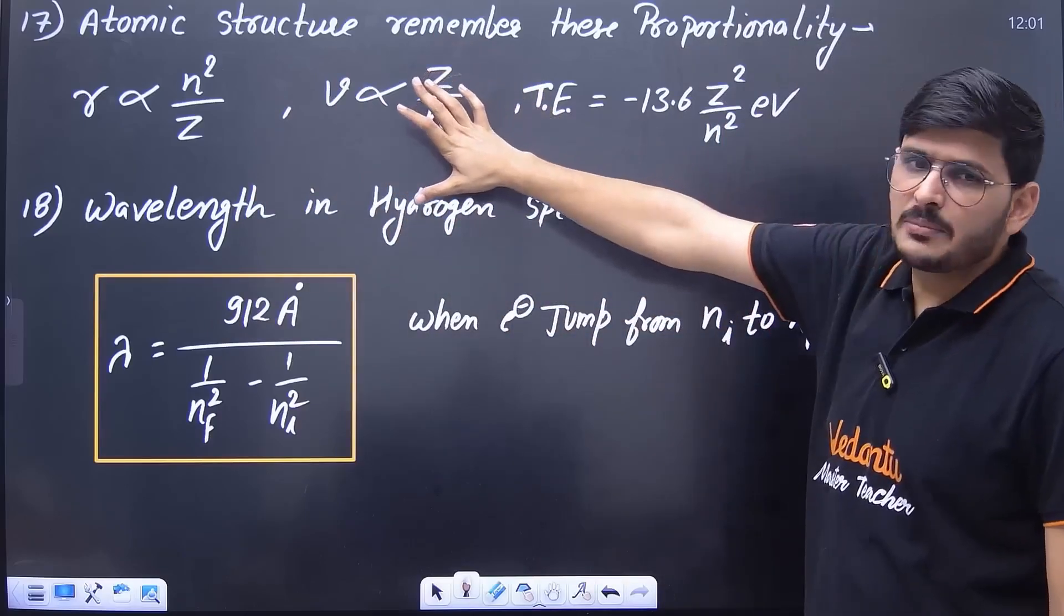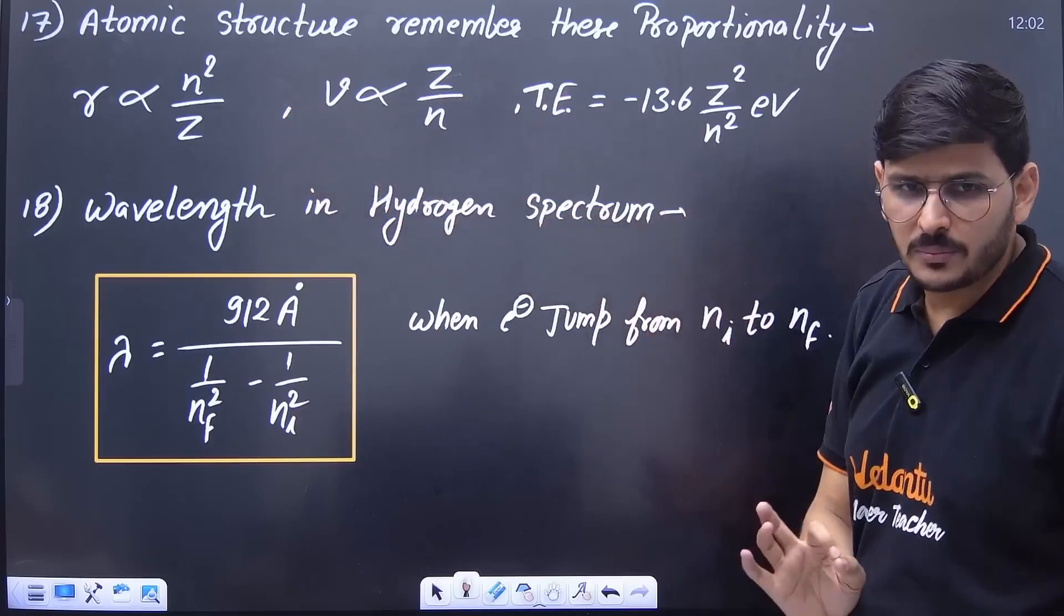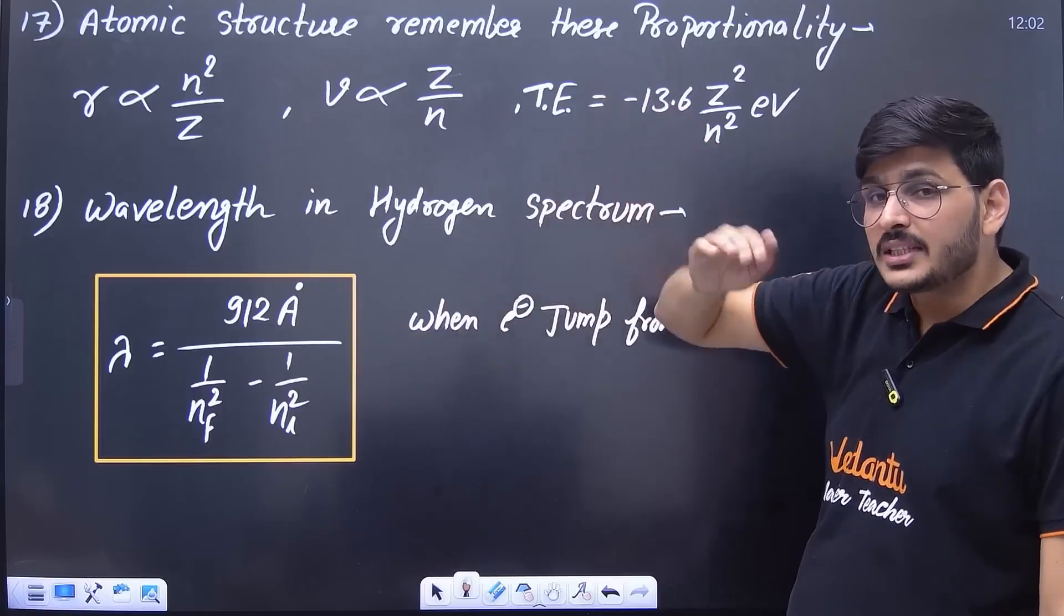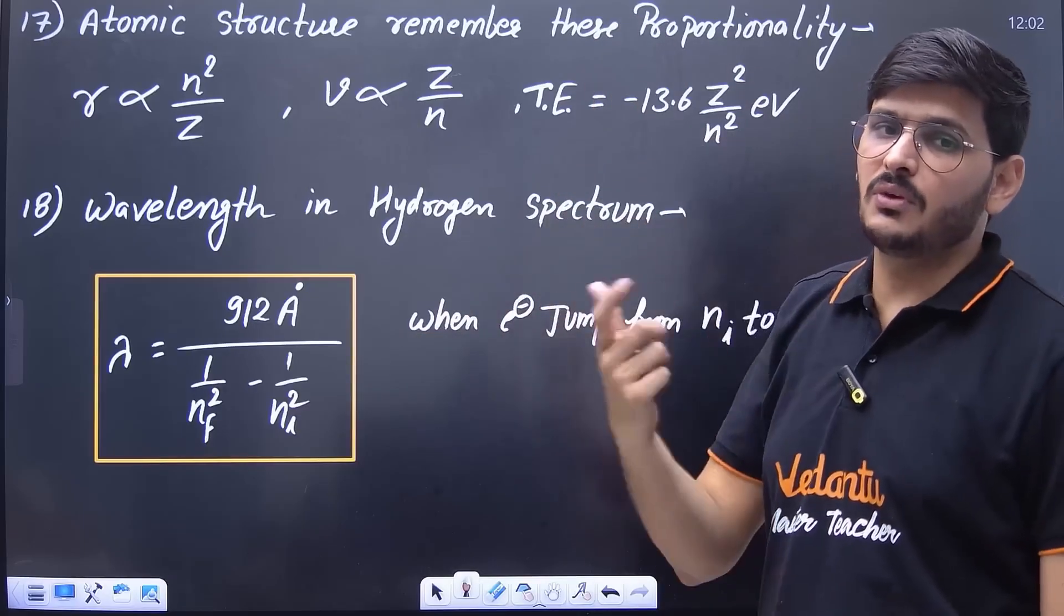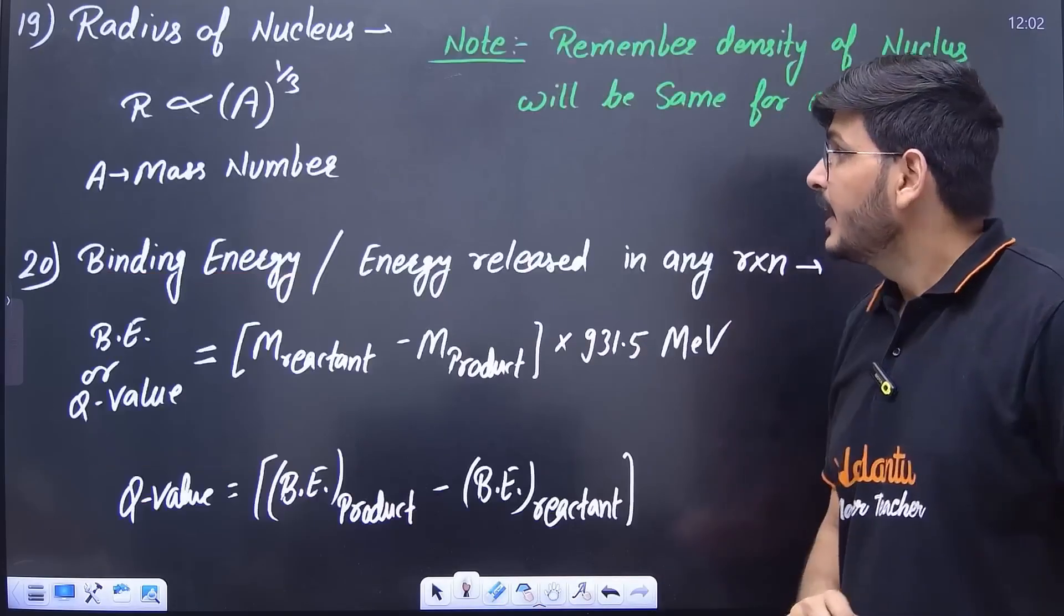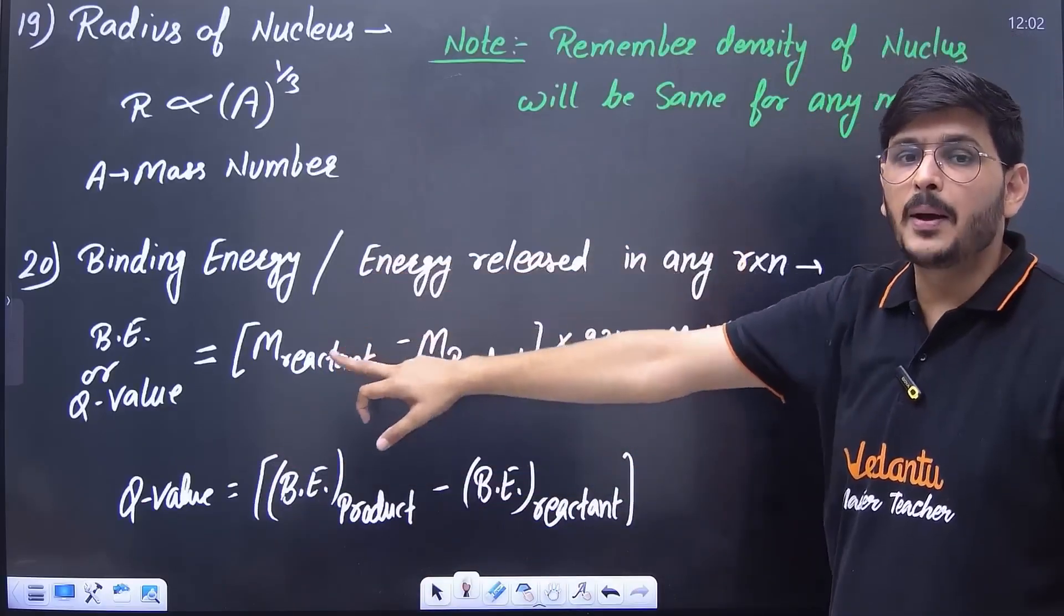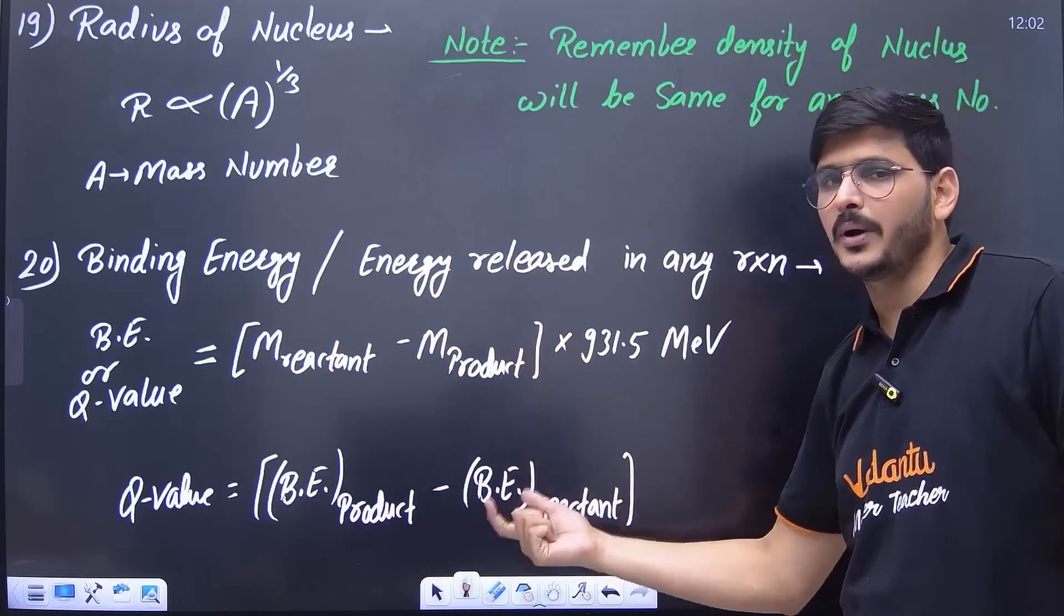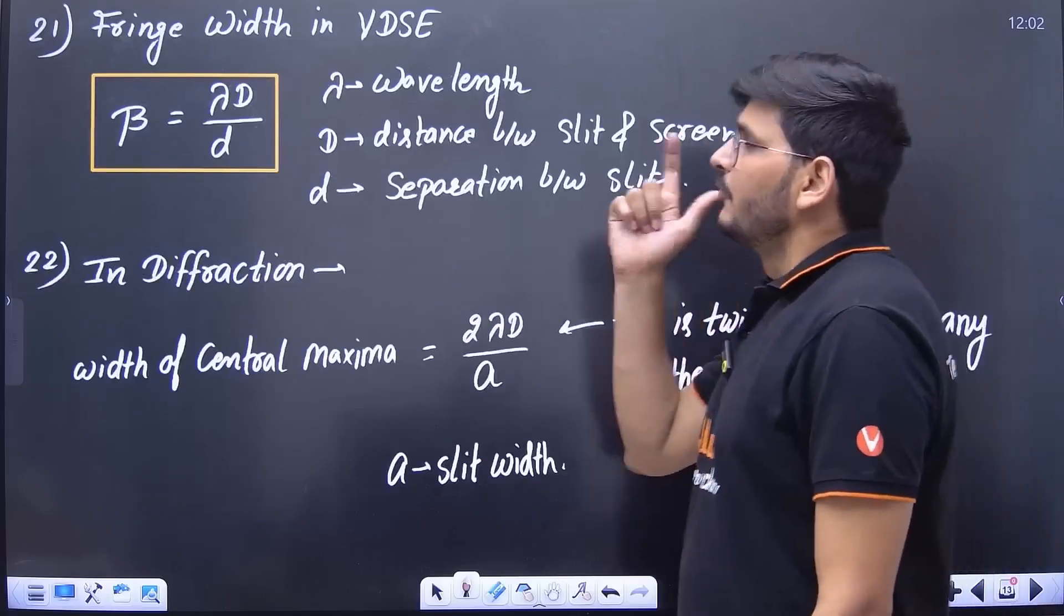If I talk about atomic structure, then the proportionality of radius, velocity and total energy is very important. This is in hydrogen spectrum, we have to calculate the wavelength. When a photon jumps from one energy level to another, how much wavelength will the photon release? What will be the wavelength of the photon? We calculate it from here. Similarly, this formula of radius is very important inside the nucleus. The concept of binding energy has to be kept in mind. Both these methods are from mass and from binding energy. We can find the Q value of any reaction.